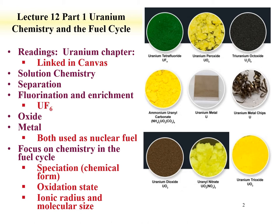Speciation is evident from the different colors of uranium compounds. UF₄ is a plus-4 oxidation state and is green, while UF₆ is a plus-6 oxidation state and looks like snow—fundamentally colorless. If you reduce uranium hexafluoride to the tetrafluoride, this green compound forms from a clear one. The uranyl species in the plus-6 state is yellow. U₃O₈ is a mixed oxidation state and is black. One can immediately understand a change in oxidation state just from color.